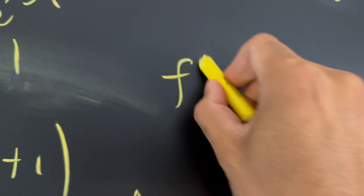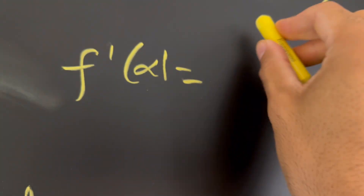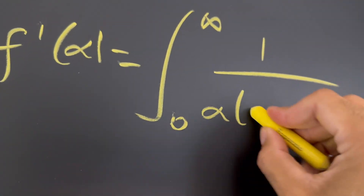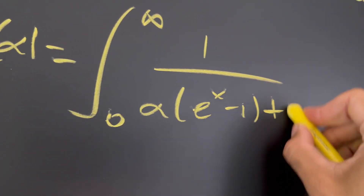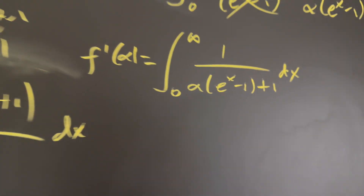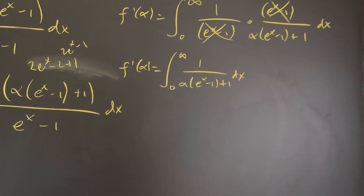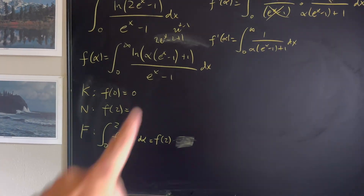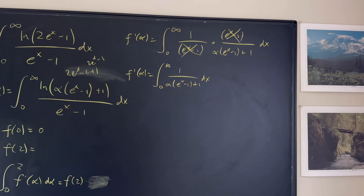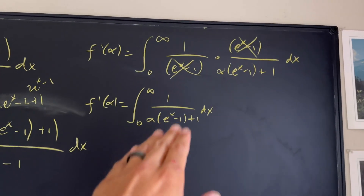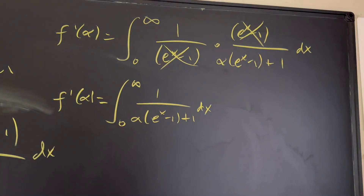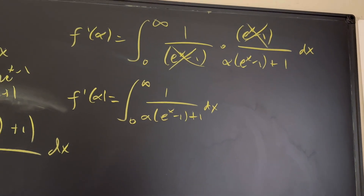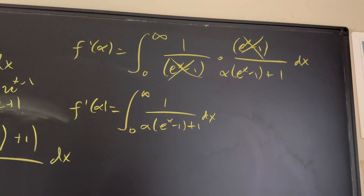Now we have f'(α) equal to the integral from zero to infinity of one over (α·e^x minus one plus one) with respect to x. Even though the Feynman technique got us here, actually integrating this with respect to x is the hardest part — we have to get a little clever.